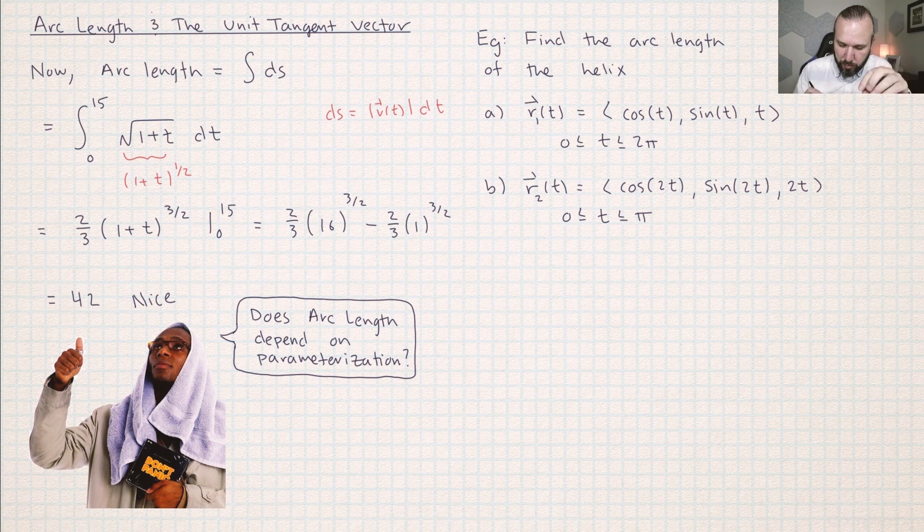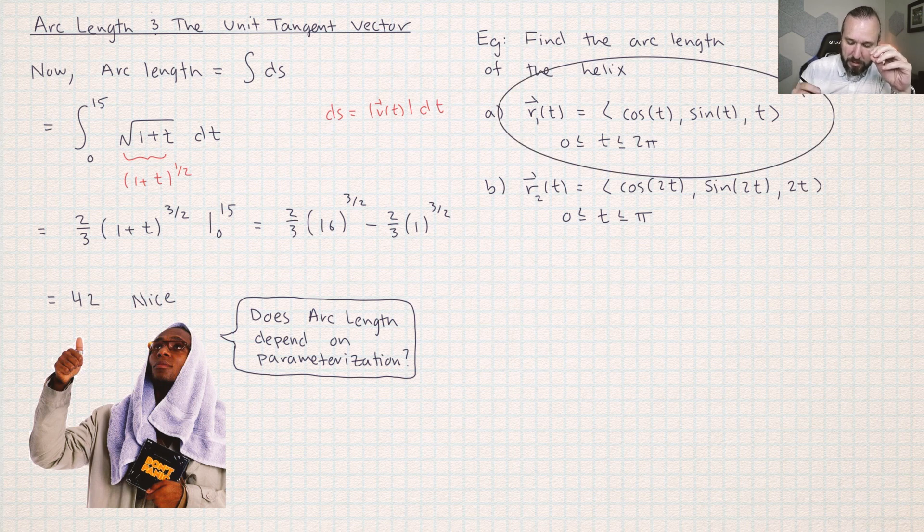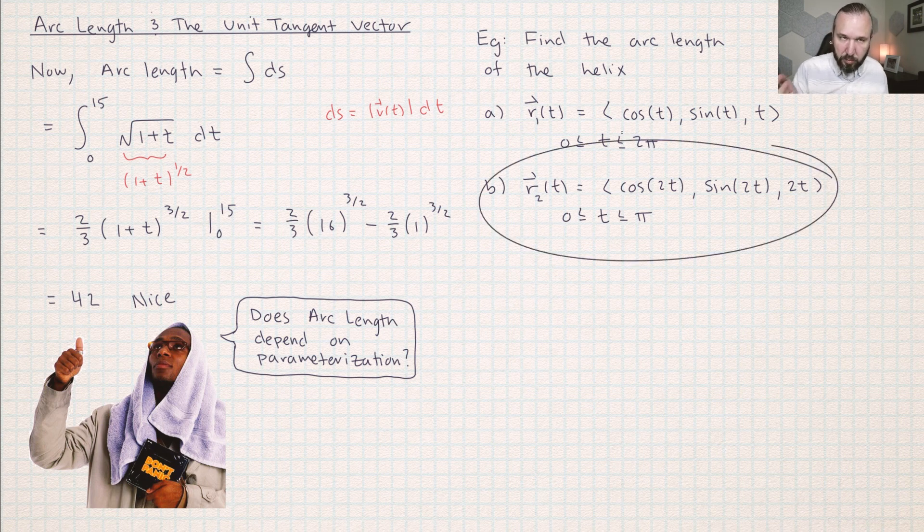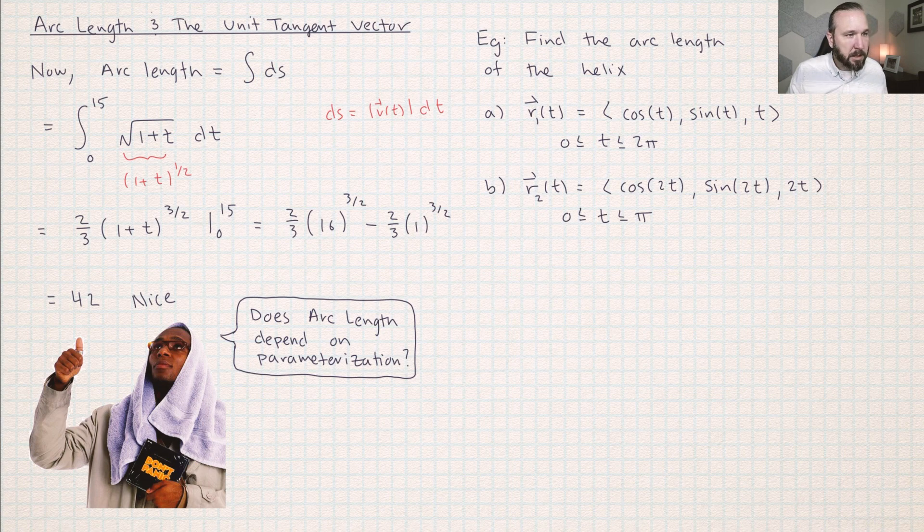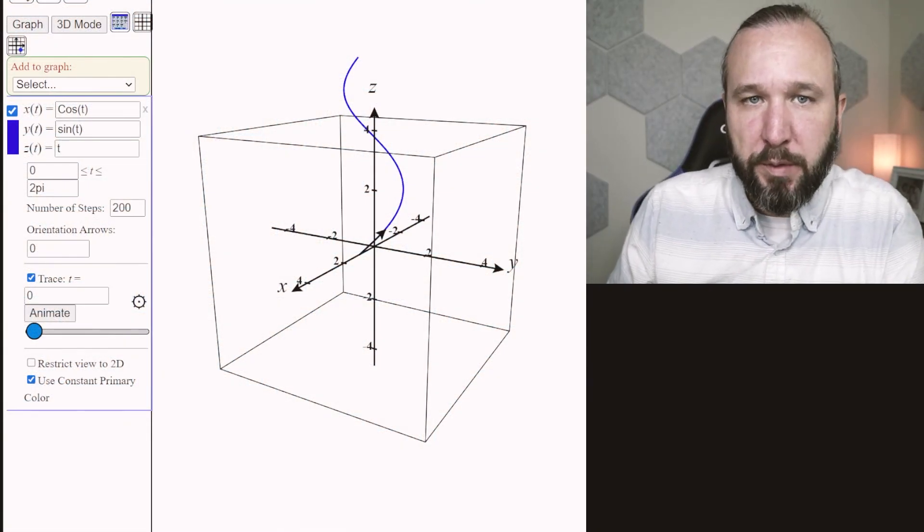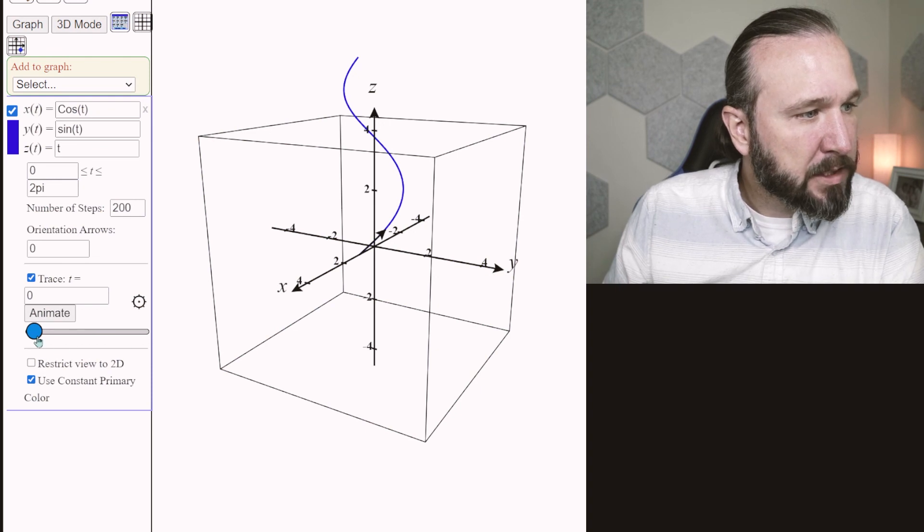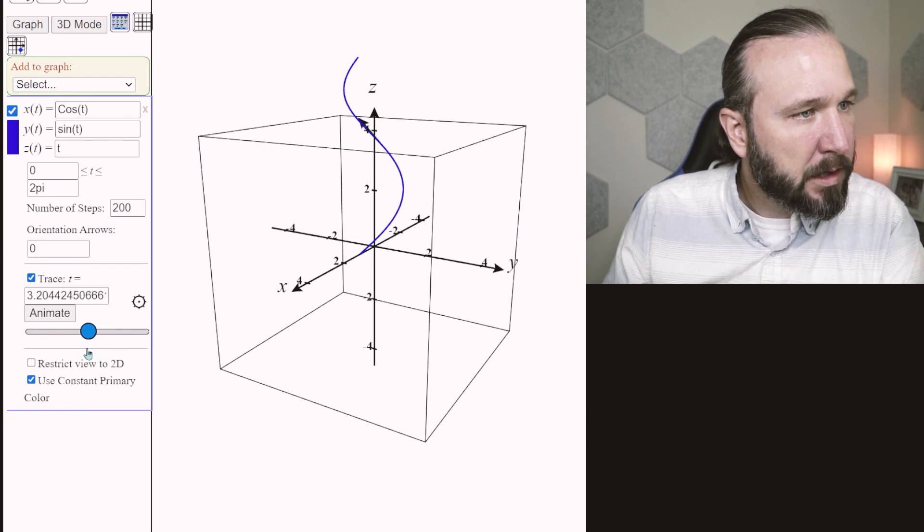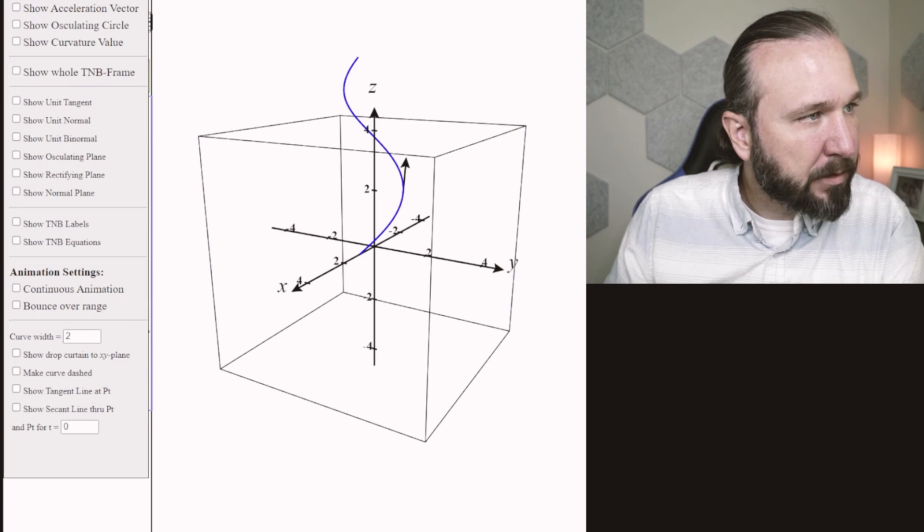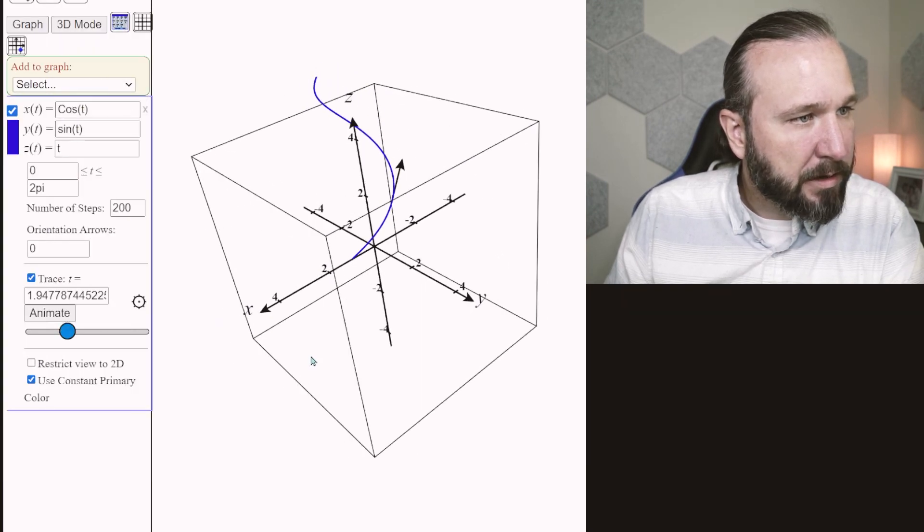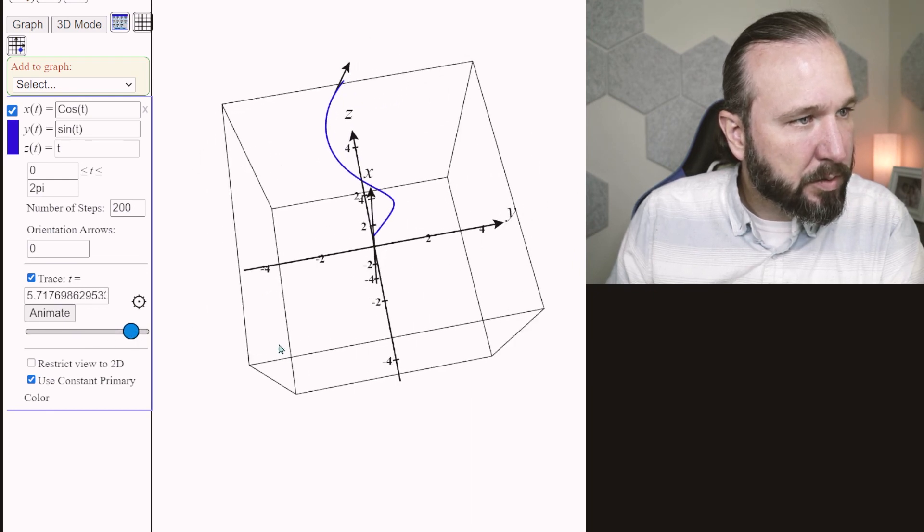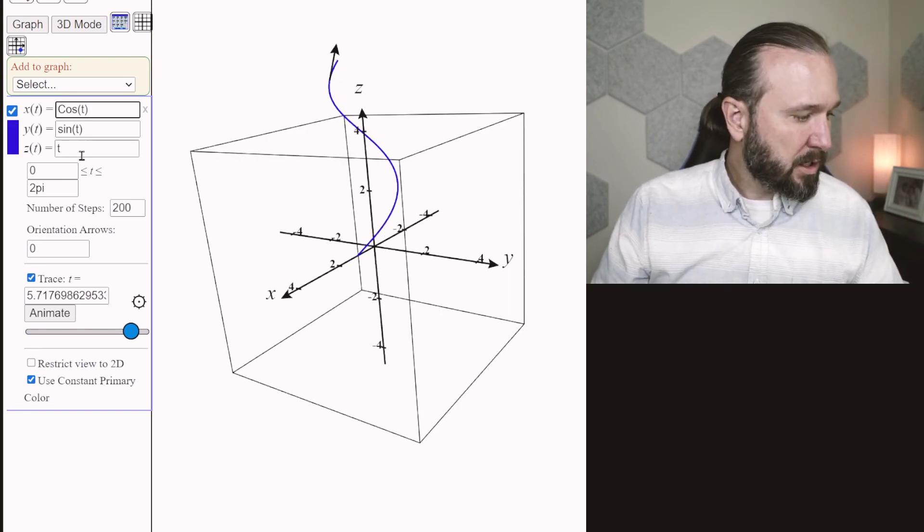Come up with two parameterizations for the same curve. Parameterization number 1 has the particle move around the curve in 2 pi seconds. And parameterization 2 has the particle move around the curve in pi seconds. Here is the graph according to CalcPlot3D. So we can see as the particle moves around this helix upwards and around the velocity arrow, that's what I have the computer graphing is just the velocity arrow. You can see that velocity arrow does not change as it goes around the helix.